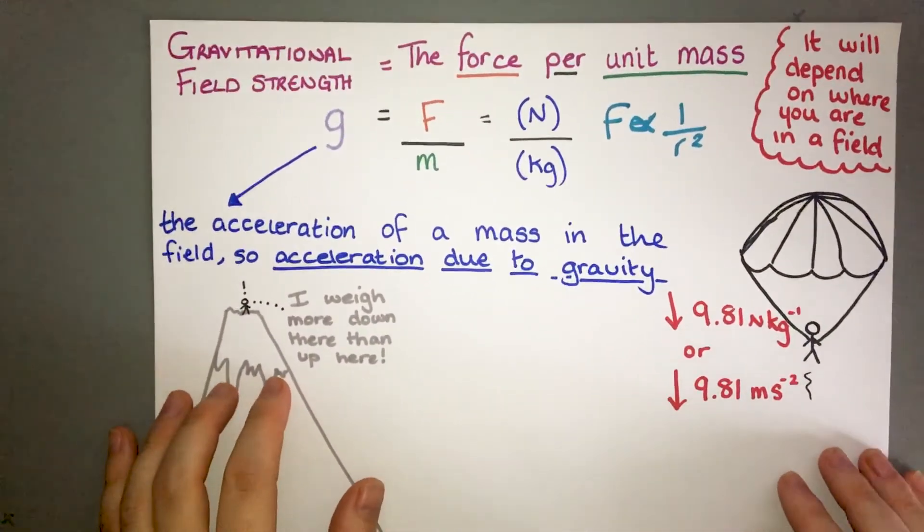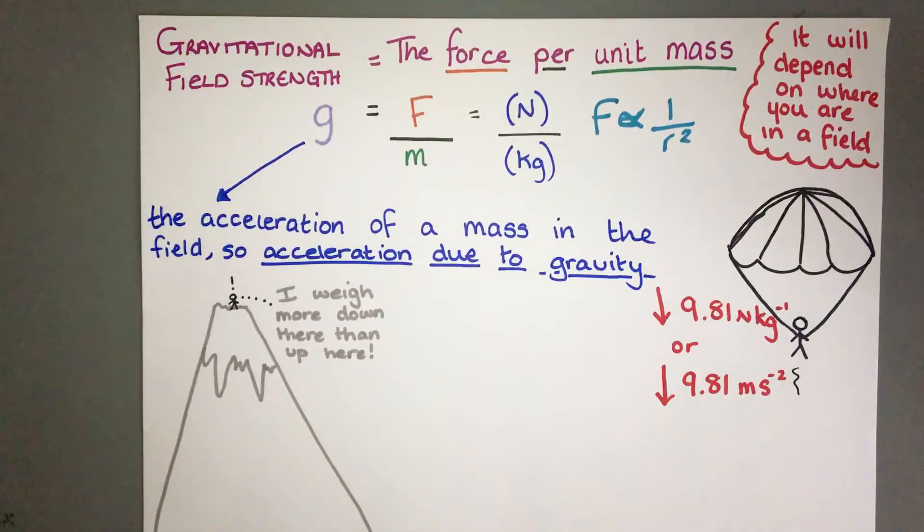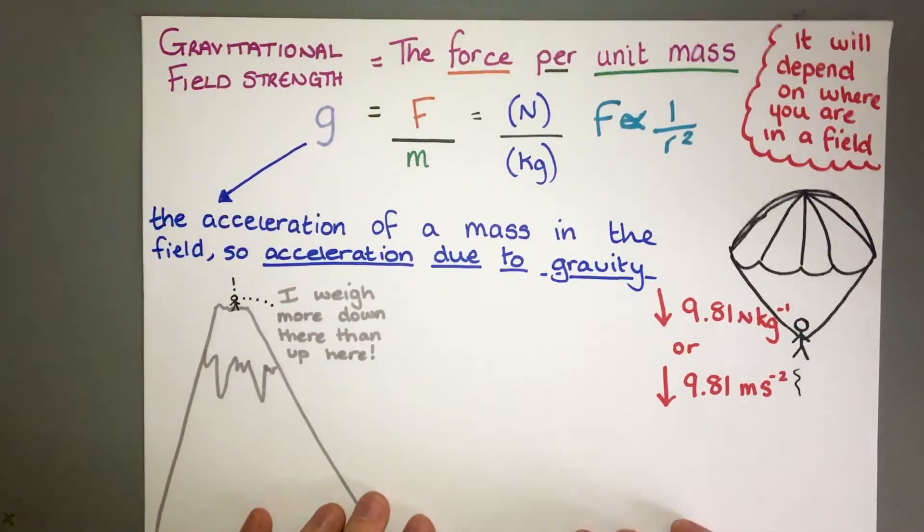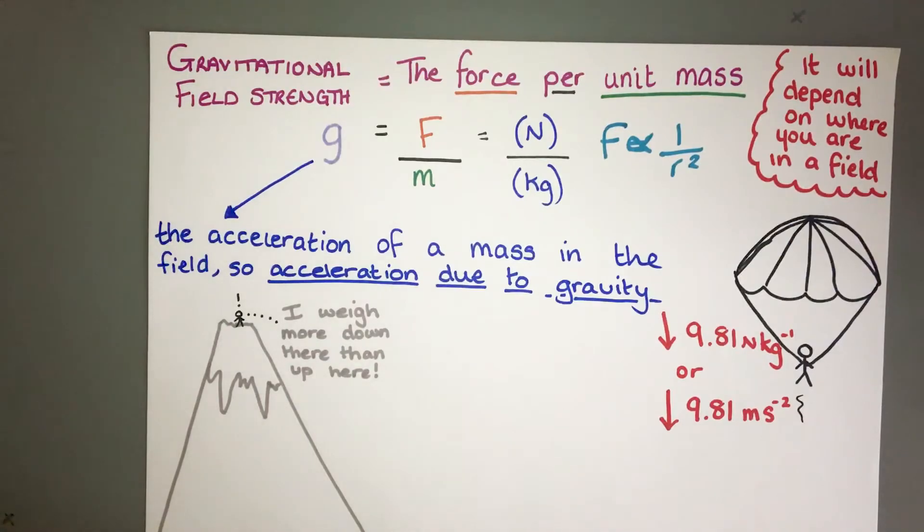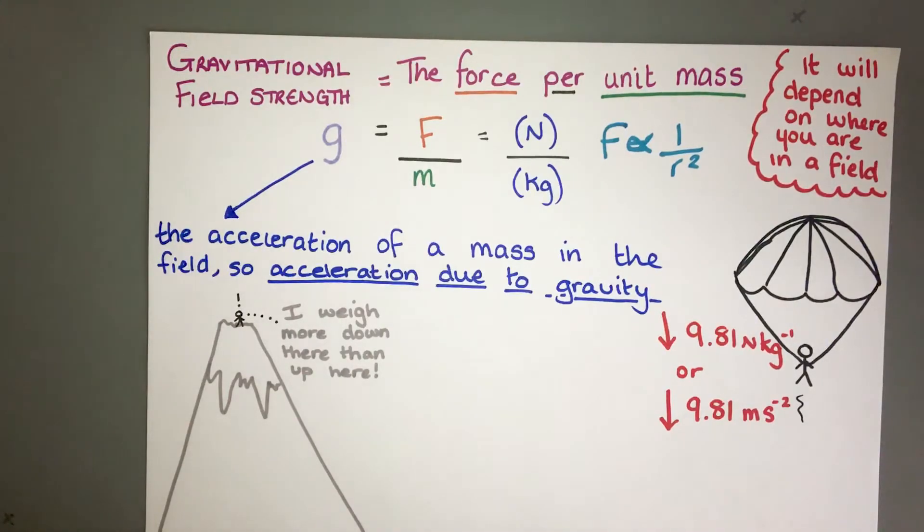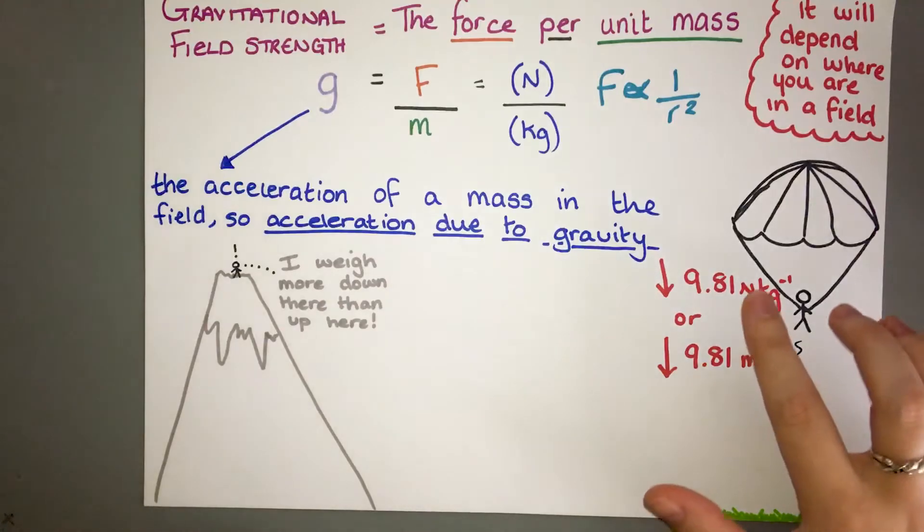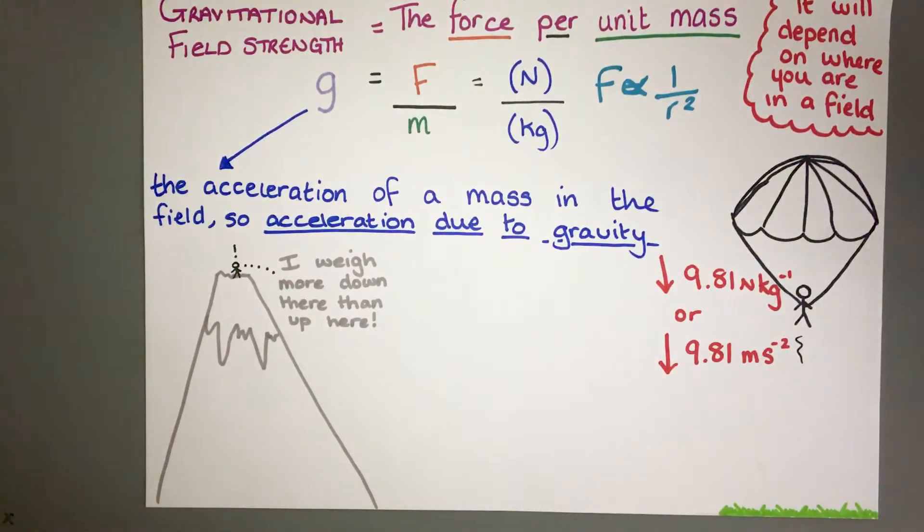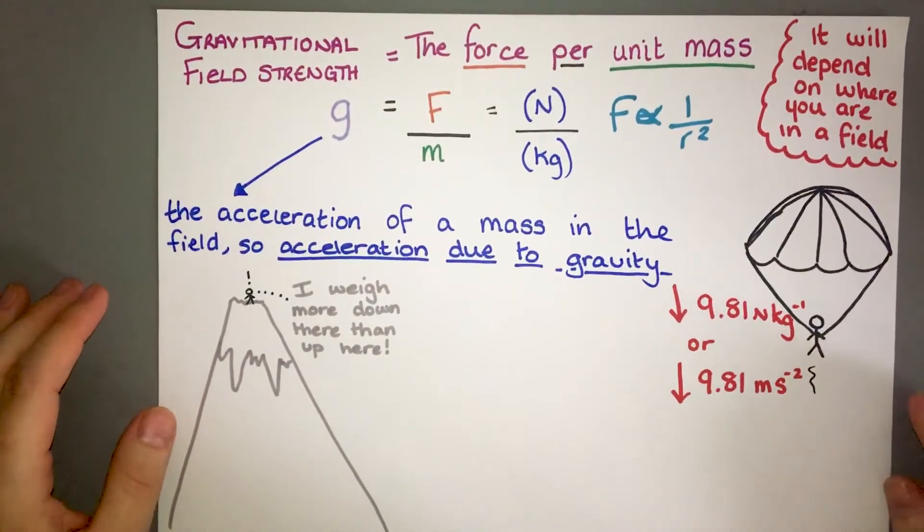A lot of you are probably sitting there thinking well in school I was taught that gravity is 9.81. I wasn't taught there is this 6.67 times 10 to the minus 11 number. That's because we were talking before about the force due to gravity. Now we're talking about the field strength due to gravity. The gravitational field strength is a force per unit mass. On every single planet, every single moon, every single star, your field strength is going to be different. This g can also be defined as the acceleration of a mass in a field, so we also know it as the acceleration due to gravity.